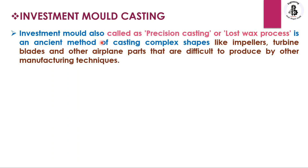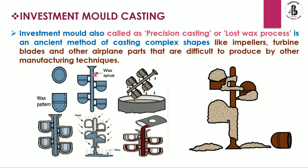Investment mold casting, also called precision casting or the lost wax process, is an ancient method of casting complex shapes like impellers, turbine blades, and other airplane parts that are difficult to produce by any other manufacturing process. It is one of the most precise casting methods, used to make highly graded components with high precision and small size. In this video we will discuss all steps along with the advantages and limitations of the investment mold casting process.